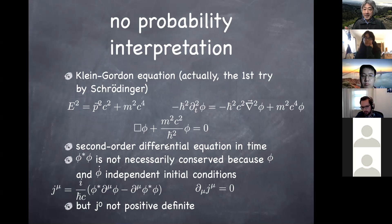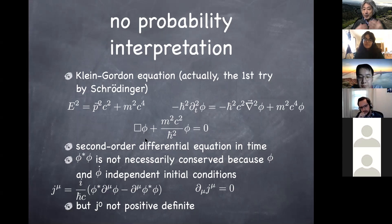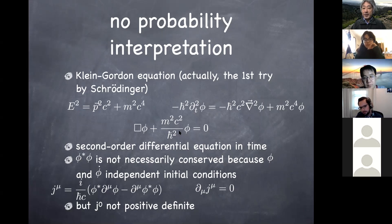If you find it unconvincing that the probability interpretation fails for the Klein-Gordon equation, consider the following conceptual question: could there be a fully relativistic equation which is first-order in time derivative? If you had asked that question 70 years ago, you could have discovered the Dirac equation. It turns out Dirac was aware of this problem and asked: could there be a relativistic version sticking with a first-order time derivative? If so, to be consistent with relativity the equation also has to be first-order in spatial derivatives since time and space must be treated on equal footing. Dirac did come up with such an equation, and we will come back and talk about that later.